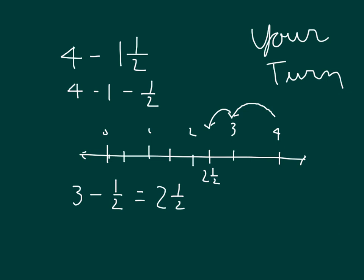Using our approach here, as we did before, we could break up 3 into 2 plus 1 minus 1 half. 2 plus 1 minus 1 half is 2 plus 2 halves minus 1 half, which is 1 half. So that's 2 plus 1 half, which is 2 and 1 half.